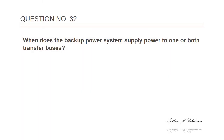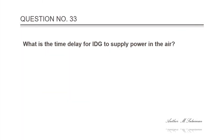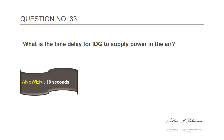Question 32: When does the backup power system supply power to one or both transfer buses? Answer: In these conditions — loss of all main AC power, single main generator operation, autoland, or backup system test after engine start. Question 33: What is the time delay for IDG to supply power in the air? Answer: 10 seconds.